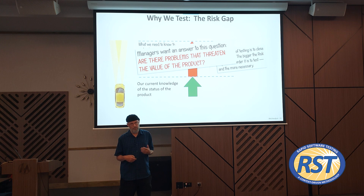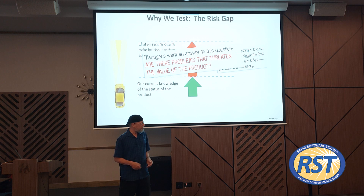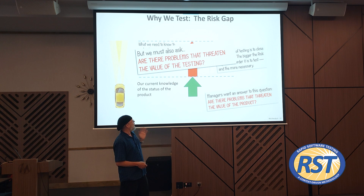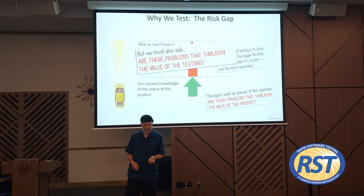We want to know about things that might threaten the value of the product to people who matter — to our testing clients and to their customers. Managers want an answer: are there problems that threaten the value of the product to people who matter? Also, we need to ask: are there problems that threaten the value of the testing itself — things that get in the way of testing, making it harder, slower, less valuable, less responsive to the needs of the project?